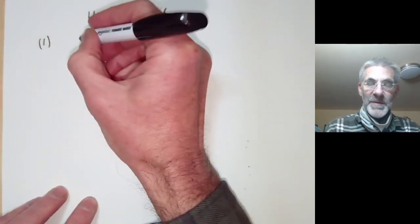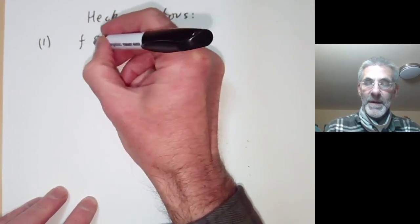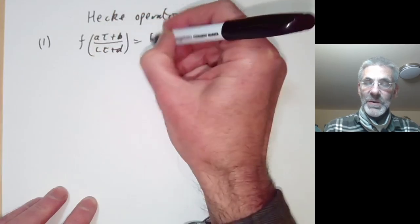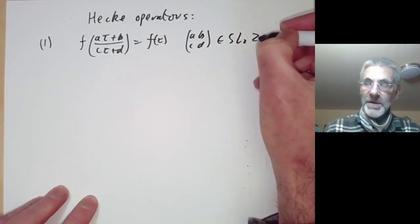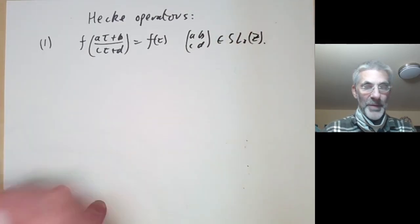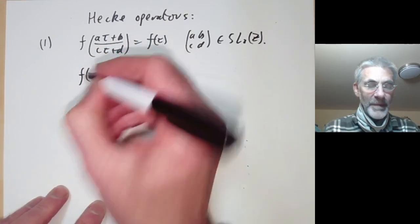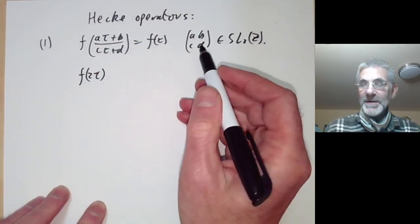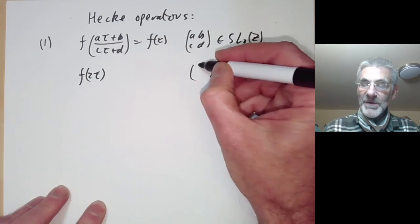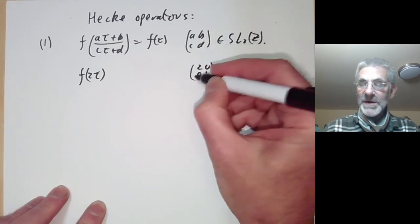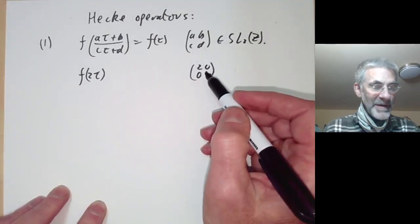The first way is as follows. Suppose f is a modular function, so f of (aτ + b)/(cτ + d) equals f of τ whenever (a b; c d) is a 2×2 integer matrix with determinant one. Now let's look at the function f(2τ). This isn't quite invariant under SL₂(ℤ) because we've changed τ to 2τ — in other words we're acting on τ with the matrix (2 0; 0 1). This means f(2τ) is invariant under SL₂(ℤ) conjugated by this matrix.